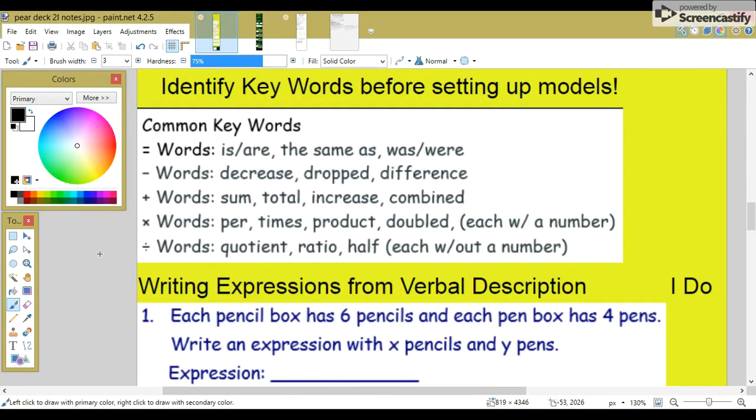For the other part of this video, we're going to be writing expressions and equations given word problems or other verbal descriptions. The first thing you need to do is identify keywords before setting up any of these models. Some common keywords for equals are: is, are, the same as, was, were.